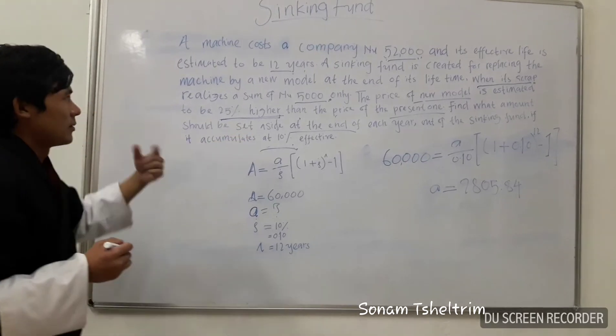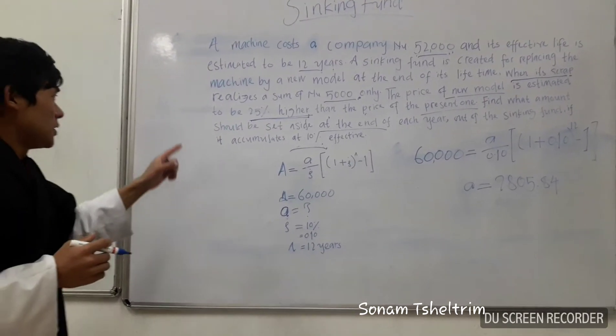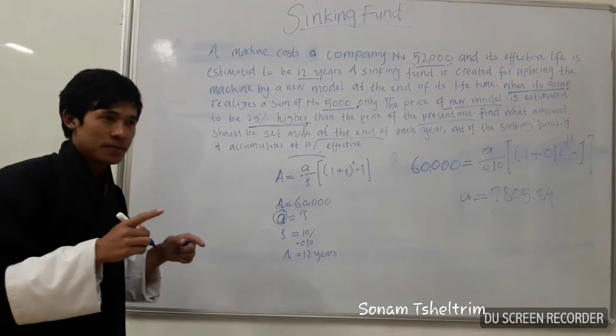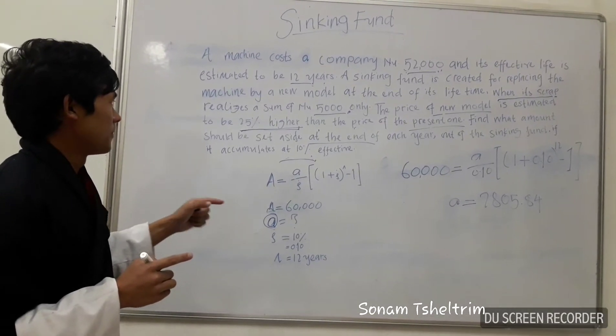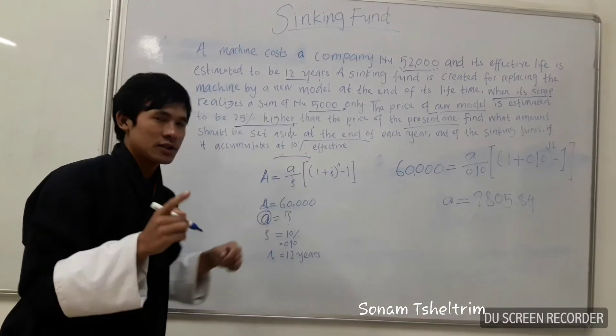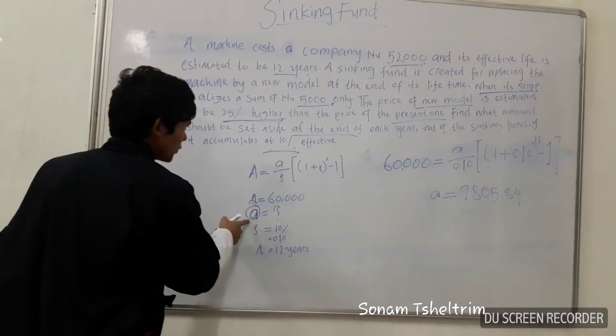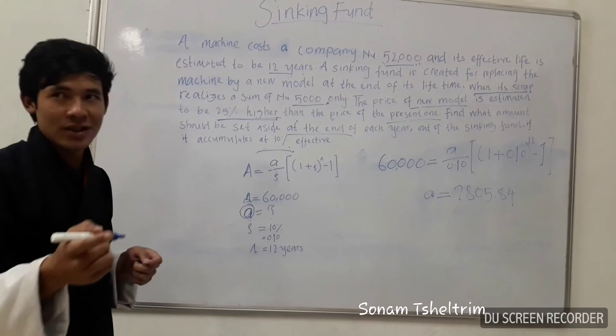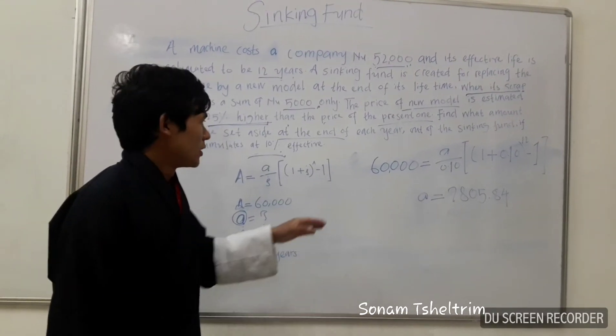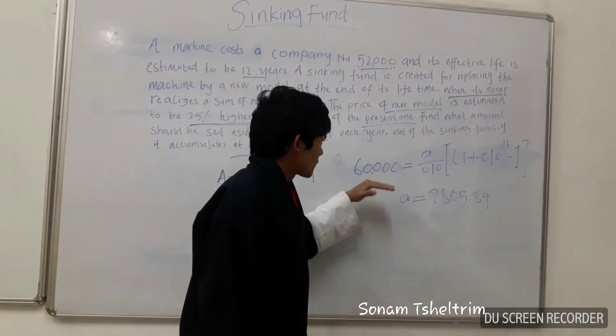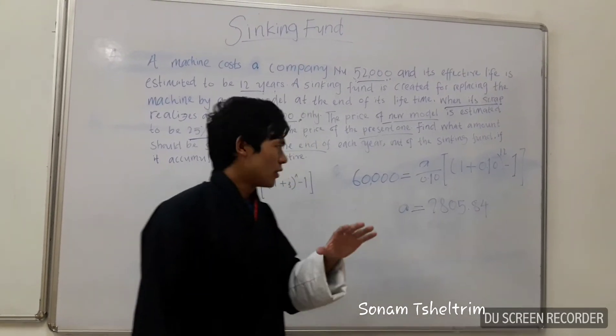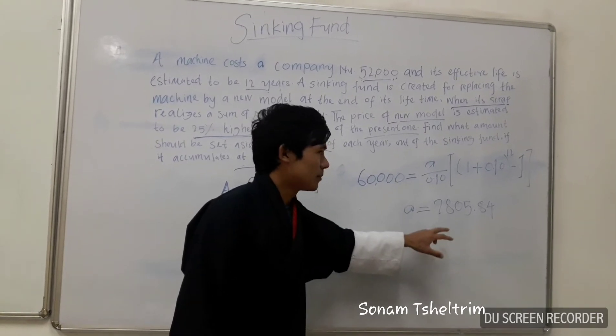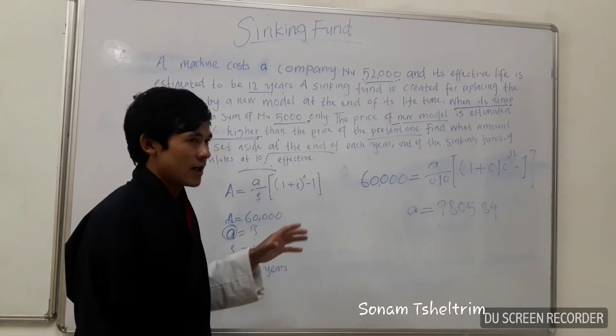The question is asking about the installment. To find this installment, we are using ordinary annuity. Why we are using ordinary annuity is the question says at the end of each year. That's why we are using ordinary annuity to get this installment. We will use this ordinary annuity formula by substituting the amount. After substituting this amount, we got the total amount of installment is 2,915.84. This must be the amount that we have to pay at the end of every year from the sinking fund.